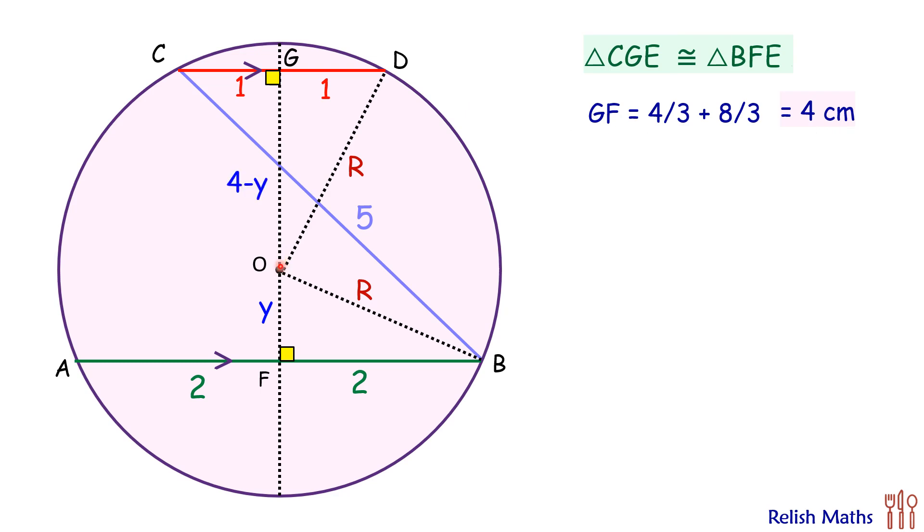In right angle triangle OFB, applying the Pythagorean theorem, we get R squared is y squared plus 2 squared. Same way, in triangle OGD, applying the Pythagorean theorem, we'll get R squared is 4 minus y squared plus 1 squared.